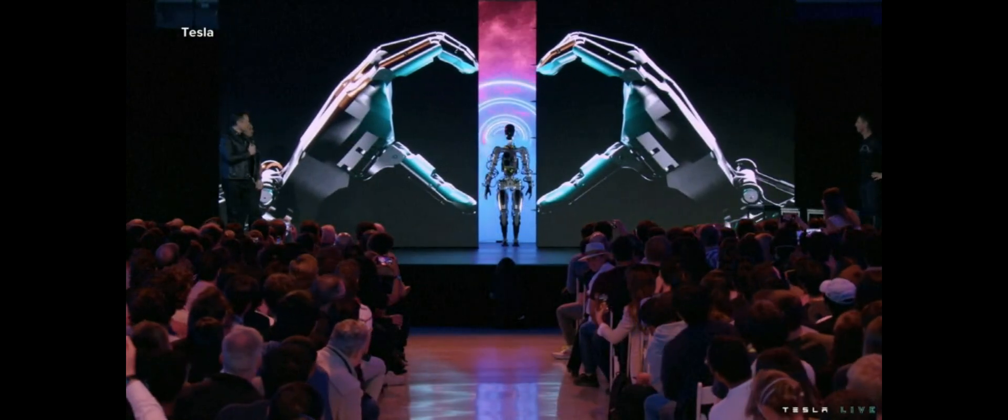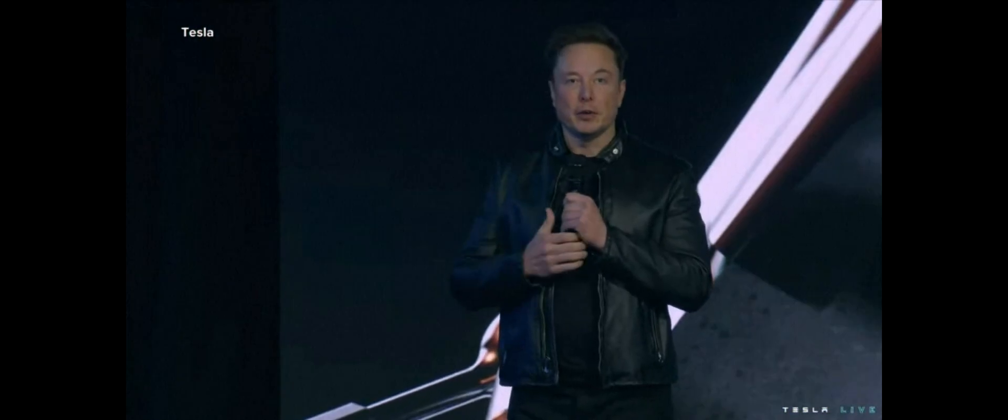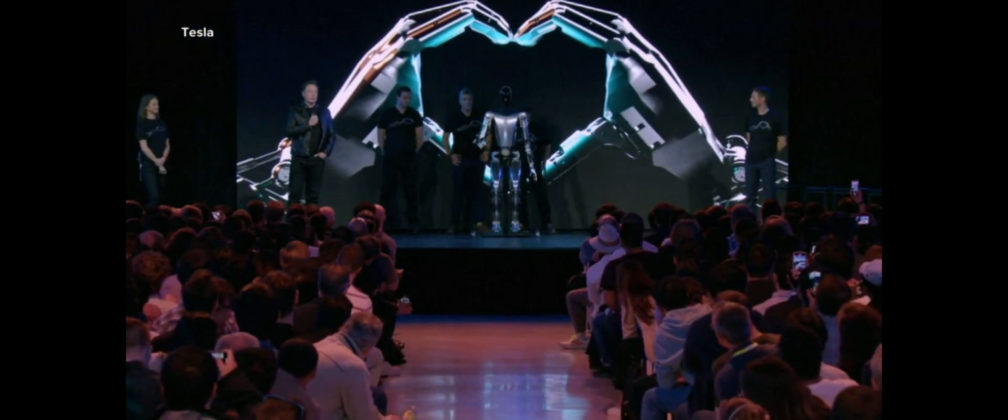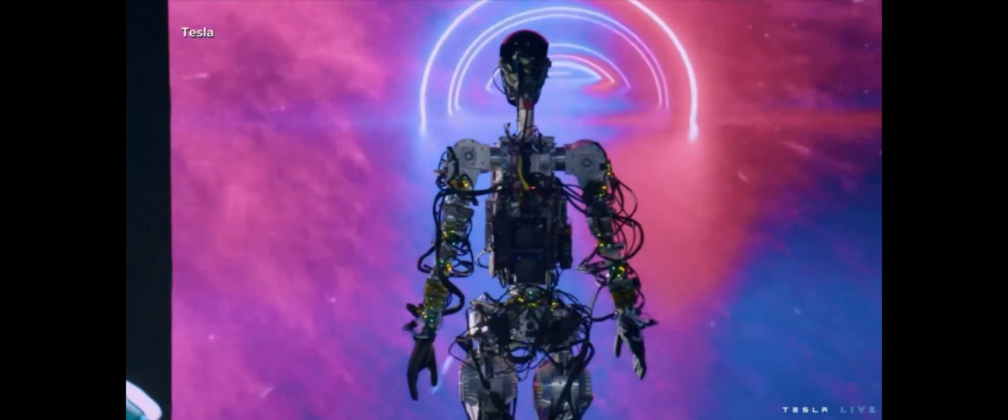Introducing Optimus, Elon Musk's long-anticipated humanoid robot. Musk and the Tesla team unveiling the robot at Tesla's 2022 AI Day. It's literally the first time the robot has operated without a tether.